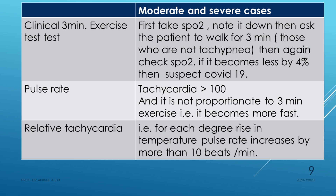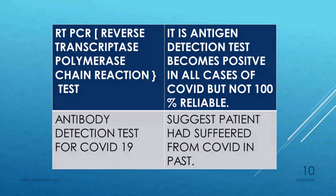The RT-PCR test — reverse transcriptase polymerase chain reaction — is a routinely done test where a swab is taken from the nasopharynx or throat. It is an antigen test; if antigens are present the test becomes positive. There can be false positive and false negative cases depending on where and how the swab is taken.